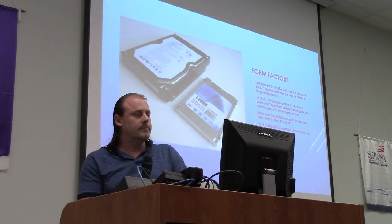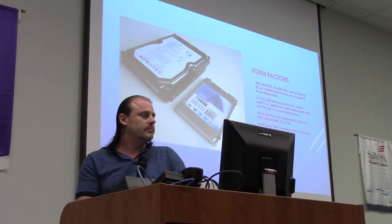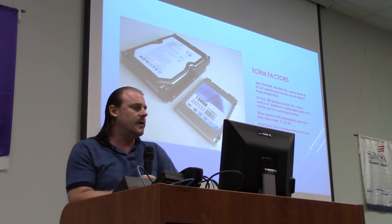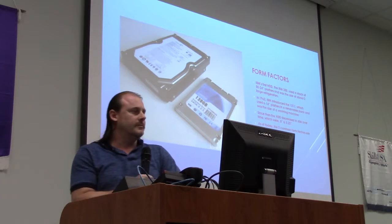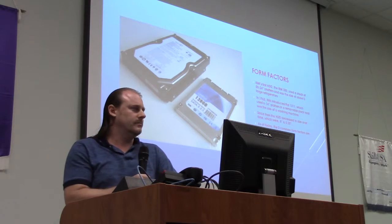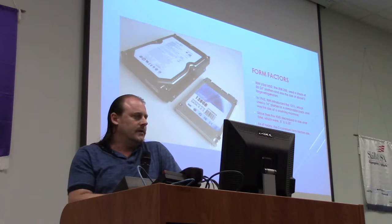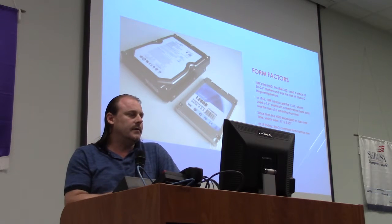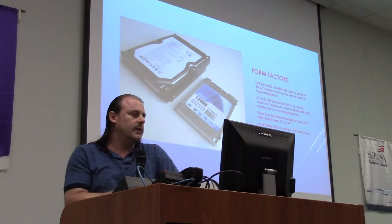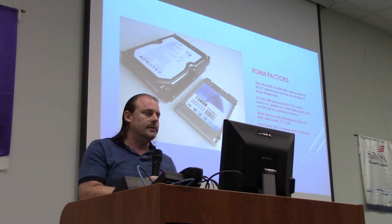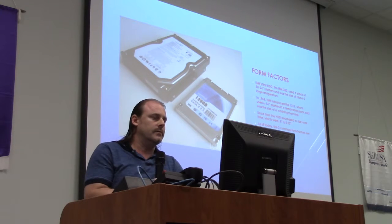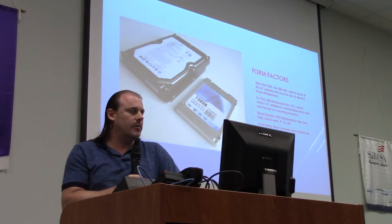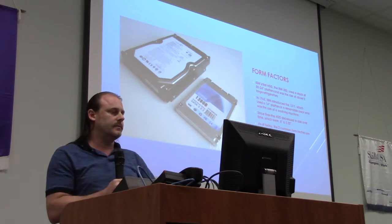Form factors. IBM's first hard drive, the IBM 350, used a stack of 50 to 24-inch platters, about the size of two large refrigerators. In 1962, IBM introduced the 1311, which used 6 to 14-inch platters in a removable pack and was the size of a washing machine. Since then, hard drives decreased in size over time — 8 inch, 5¼ inch. As of today, two common form factors are 3½ and 2½ inch.